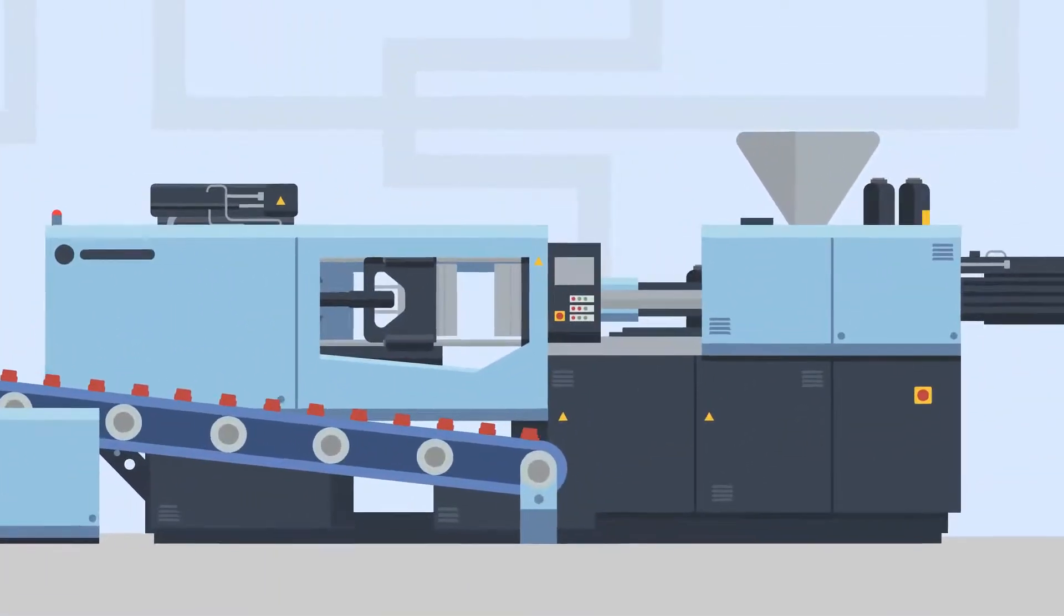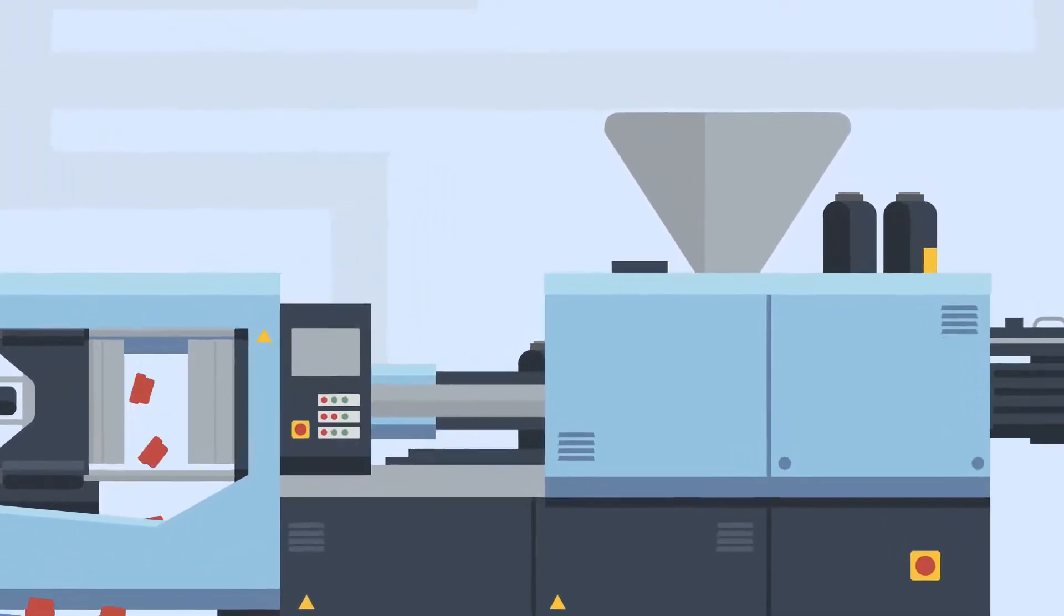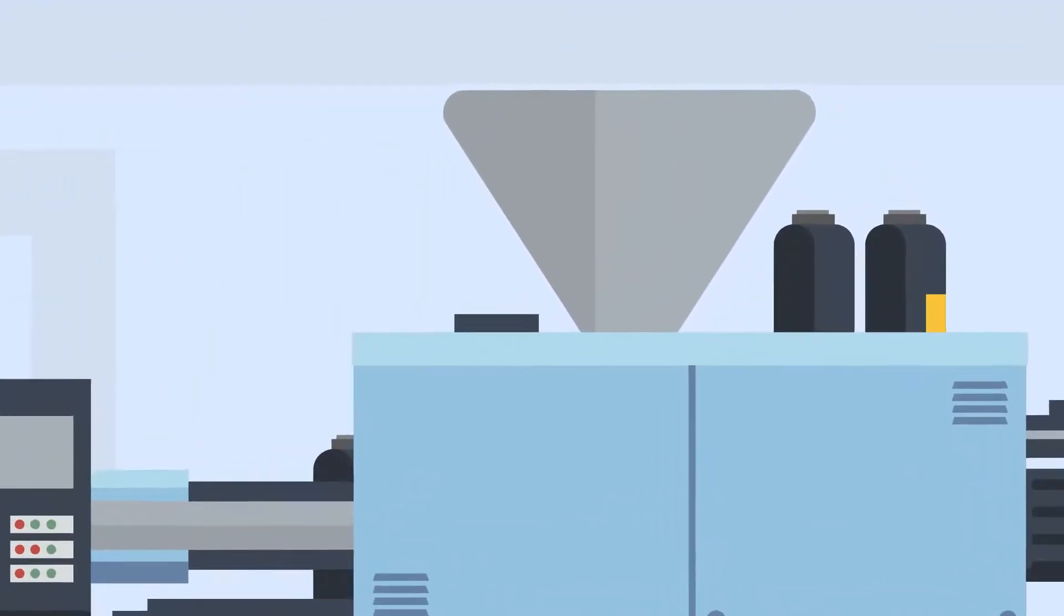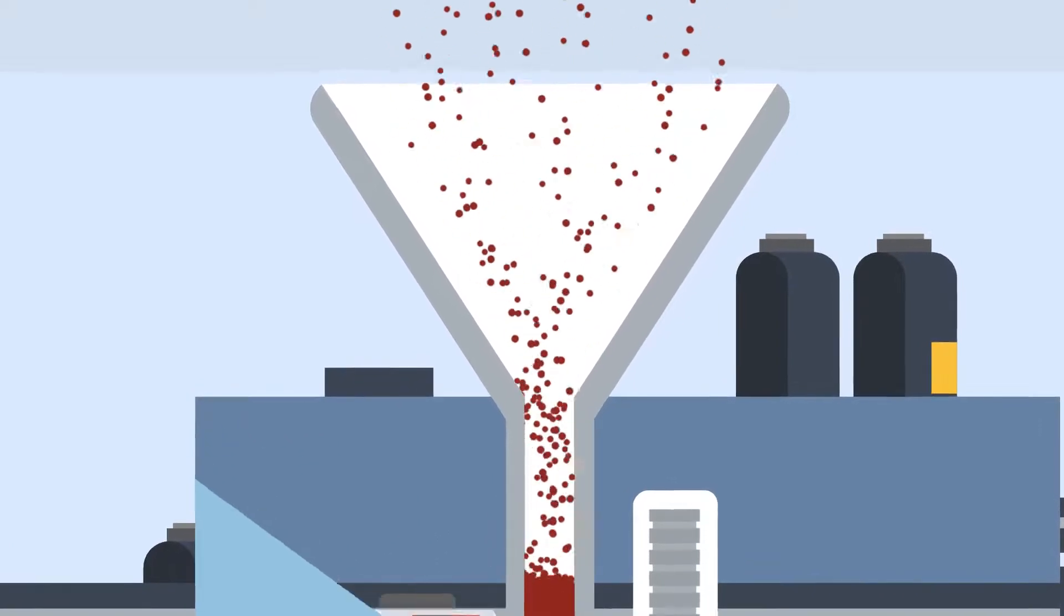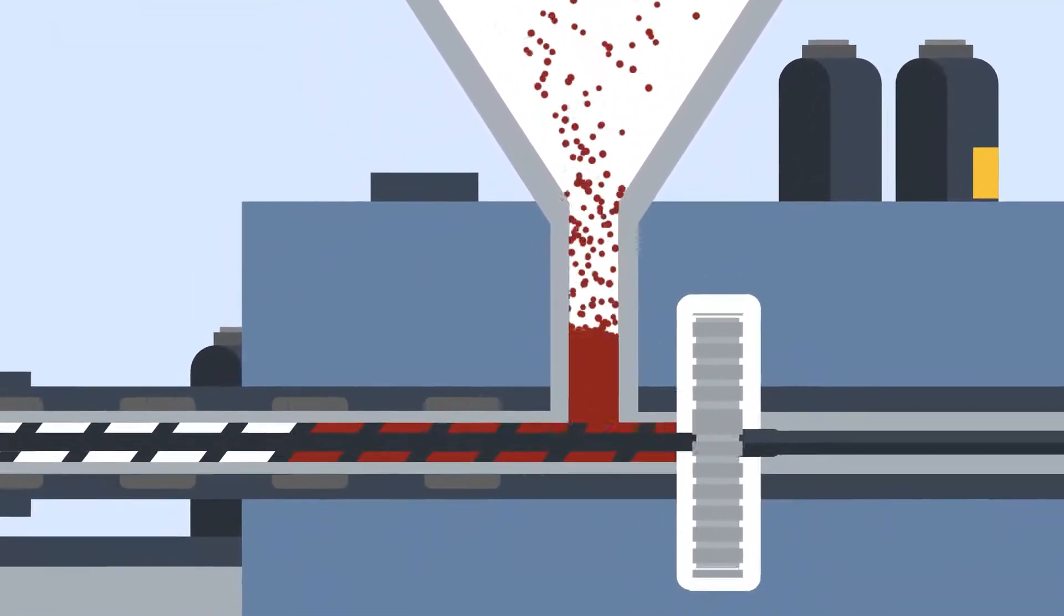So let's take a look at how the injection moulding process works. First, raw plastic pellets are poured into the hopper at the top of the machine. This can be one type or a combination of different plastics.